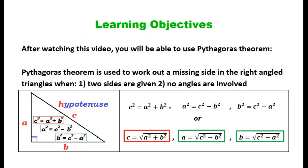Learning Objectives. After watching this video, you will be able to use Pythagoras Theorem. Pythagoras Theorem is used to work out a missing side in right-angled triangles when two sides are given and no angles are involved.